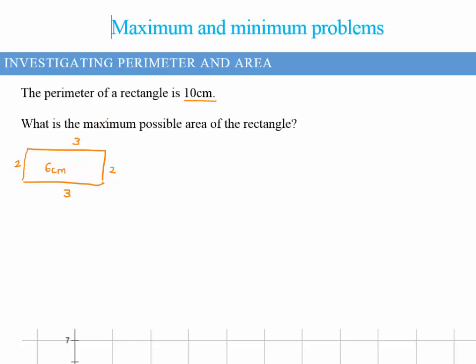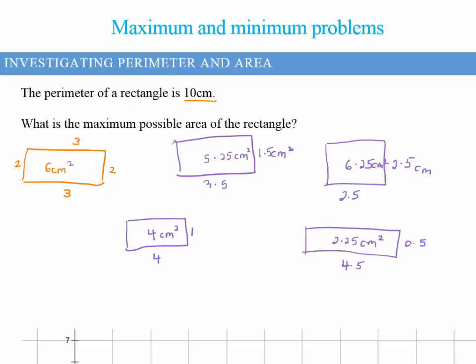Pause the video now and come up with some other rectangles. Here are some examples I've worked out, including decimals. You can see all of these give a perimeter of 10 centimeters, and in the middle I've put just the areas that each rectangle would give.